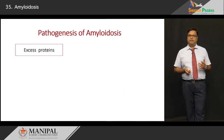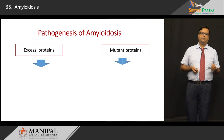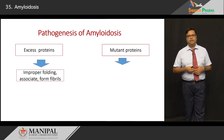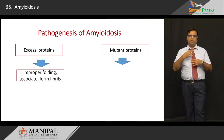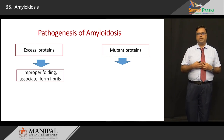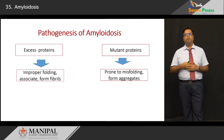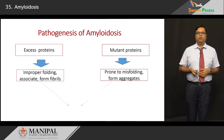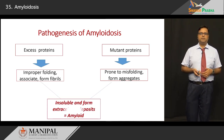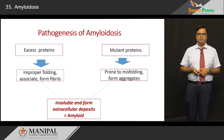In pathogenesis, excess proteins or mutant/misfolded proteins accumulate. Because of improper folding they associate, like tangled hair, and result in formation of fibrils. At the same time, misfolded proteins are prone to more misfolding, more aggregation, and more insolubility. Eventually they get deposited in an insoluble form, especially in extracellular tissues — which we term amyloidosis.